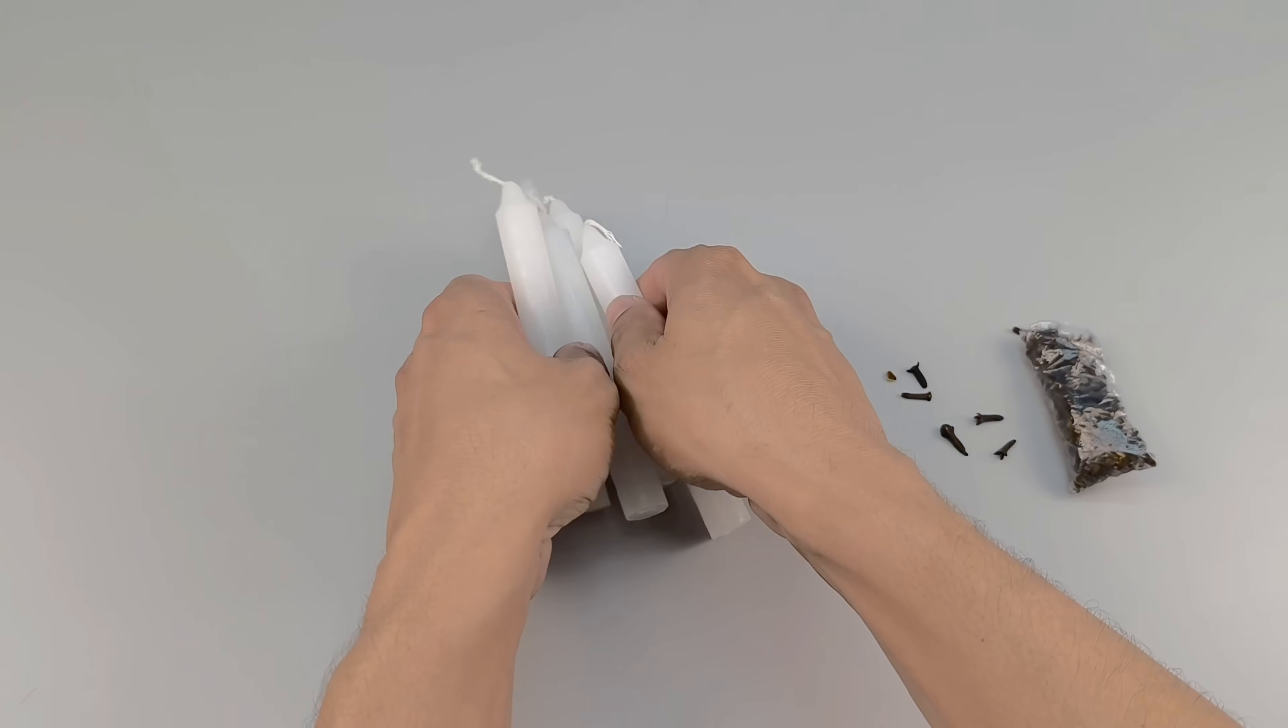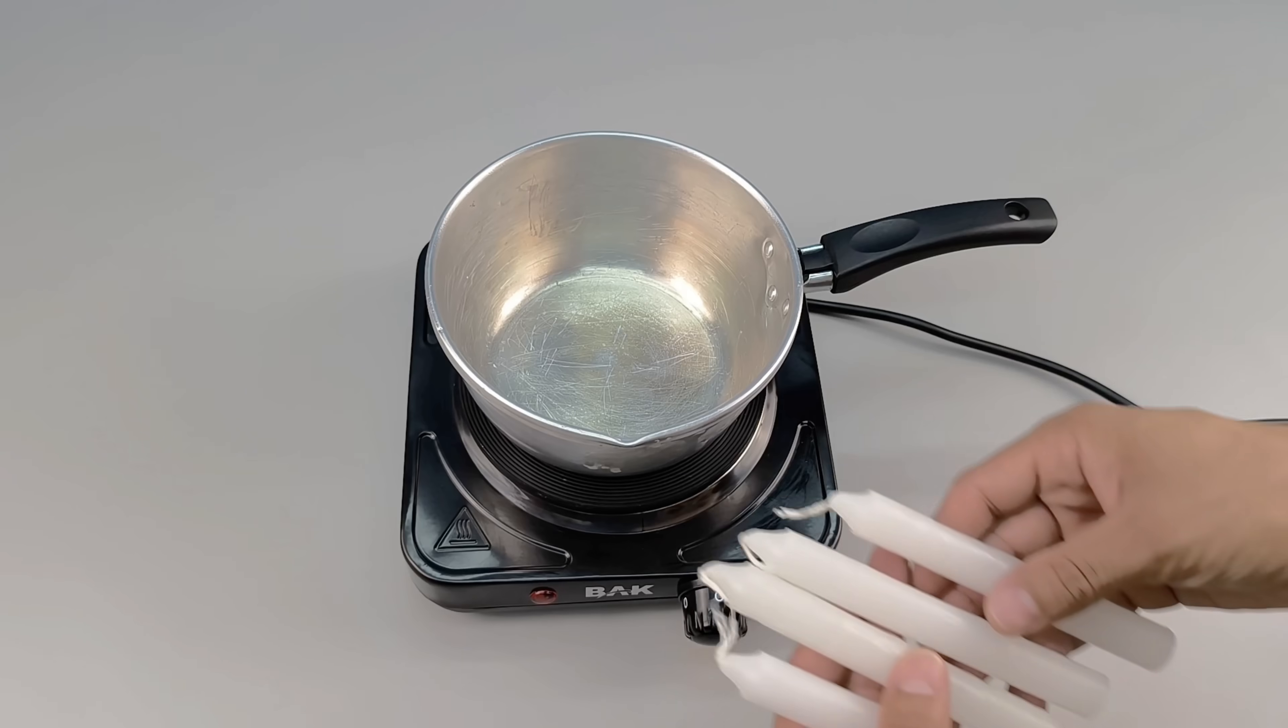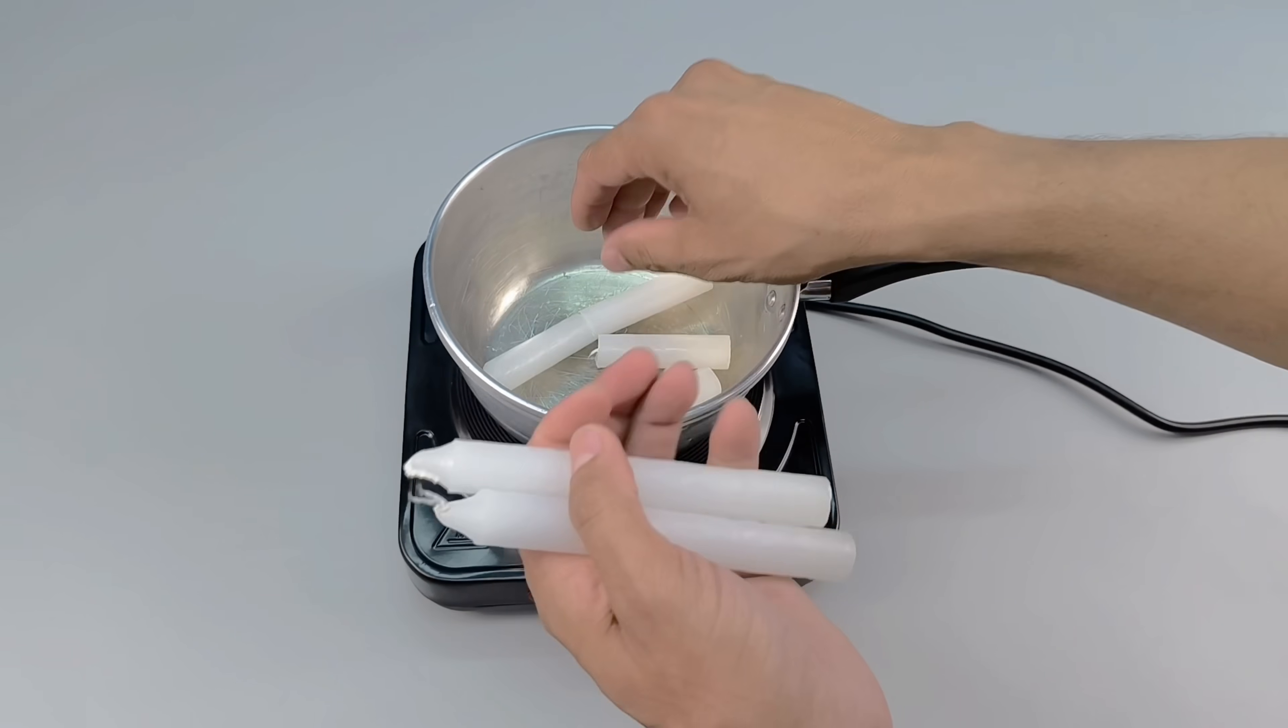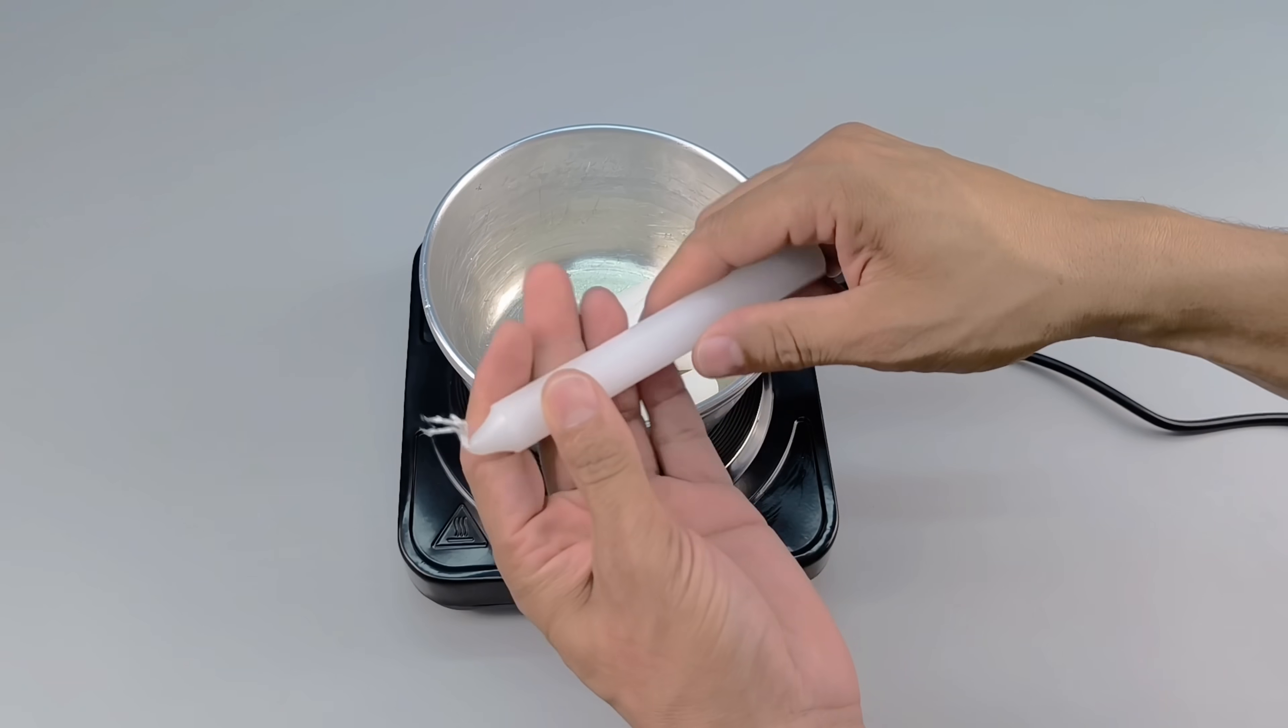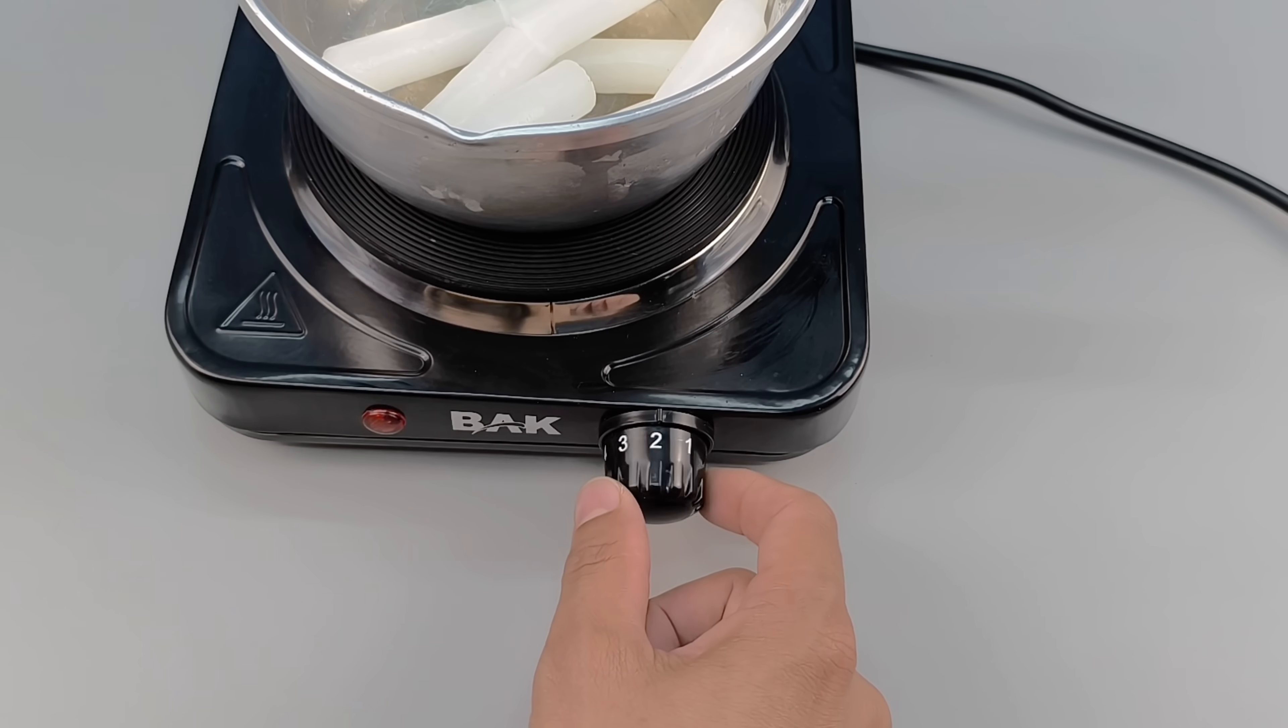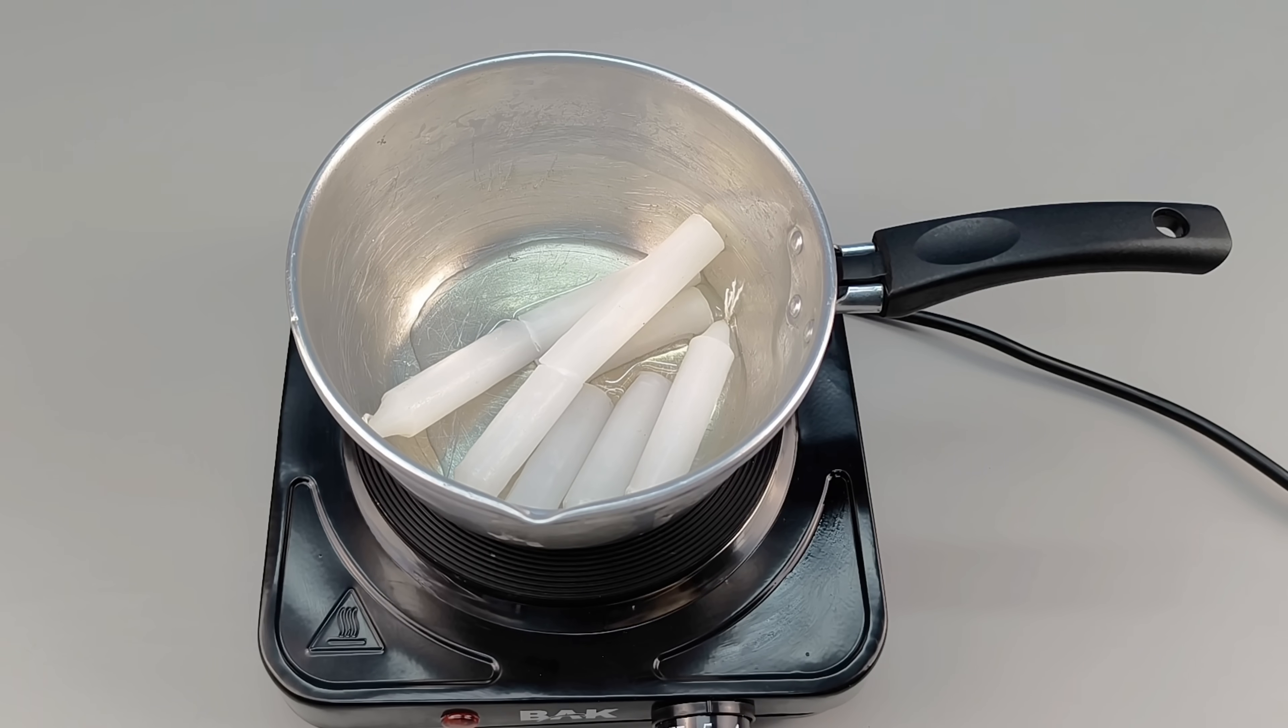Here I have four common candles, the kind you can easily find at any grocery store or hardware store. The first step is simple. Melt all the wax until it's completely liquid and uniform. You can use low, medium, or high heat. The wax melts easily and quickly, but be careful not to let it burn.